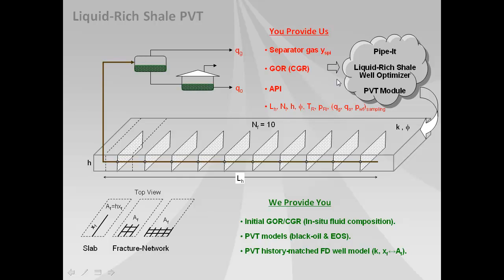The Pipet shale well optimizer PVT module will then provide to you estimates of the initial fluid composition in terms of both solution GOR for an oil or solution CGR for gas condensate, both black oil and EOS models and a history matched to the PVT sampling data finite difference well model with fine gritting and the type of fracture geometry that you've selected.